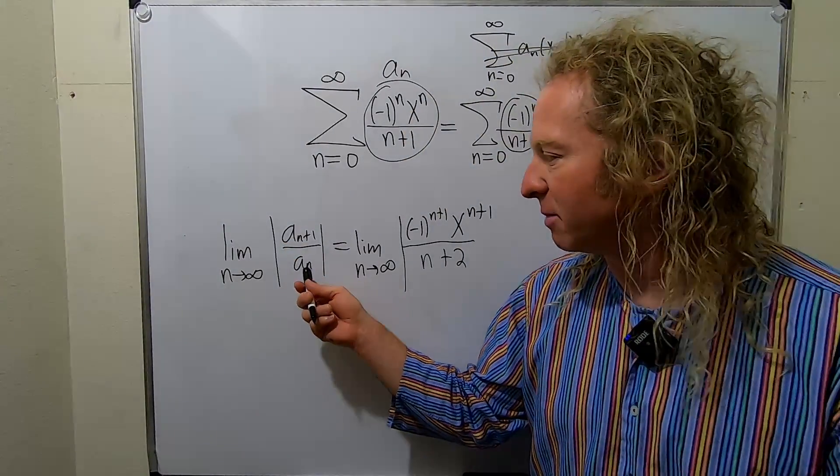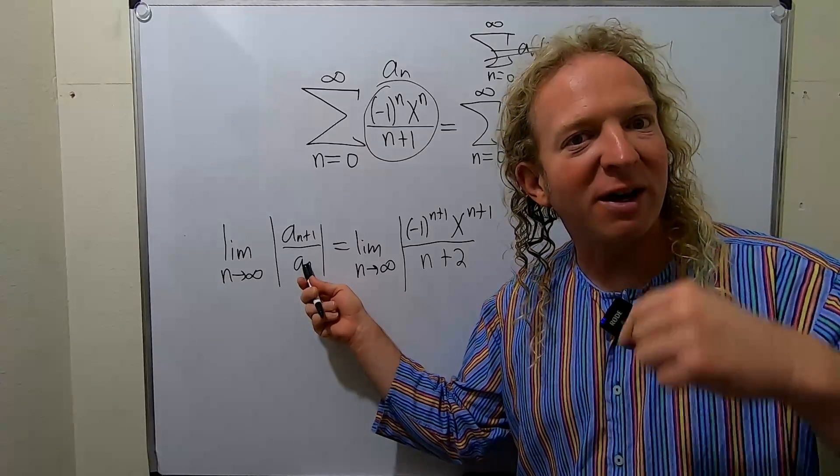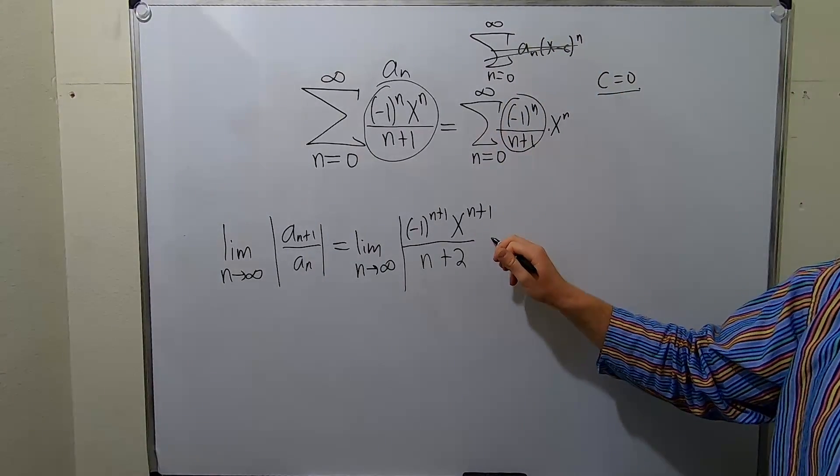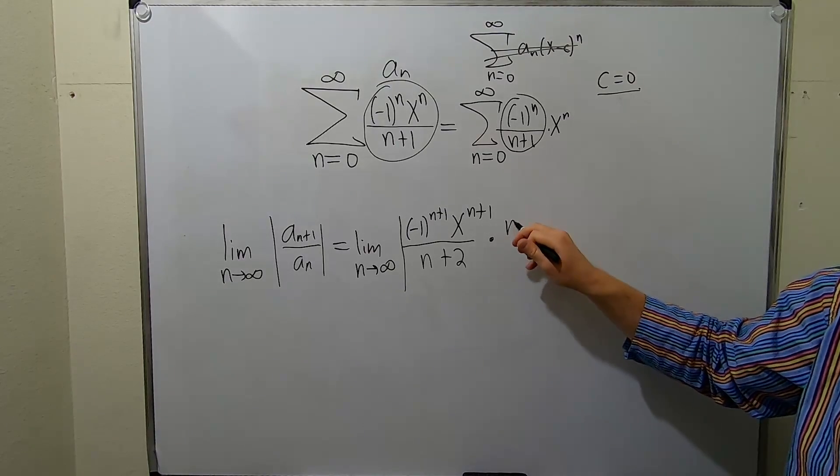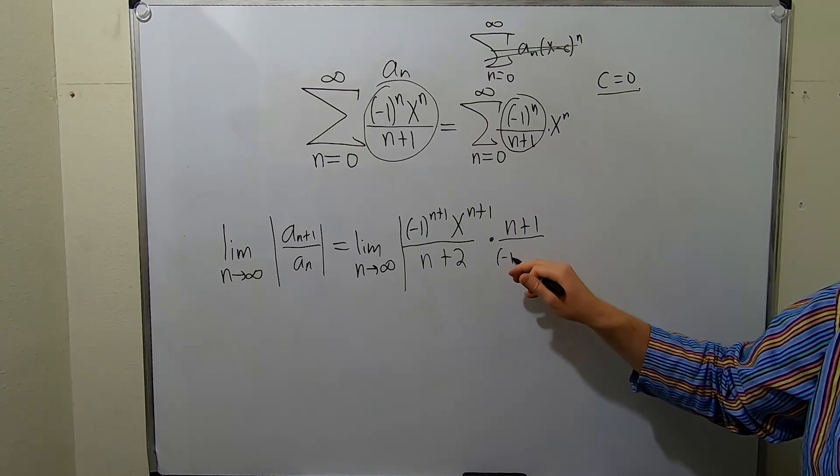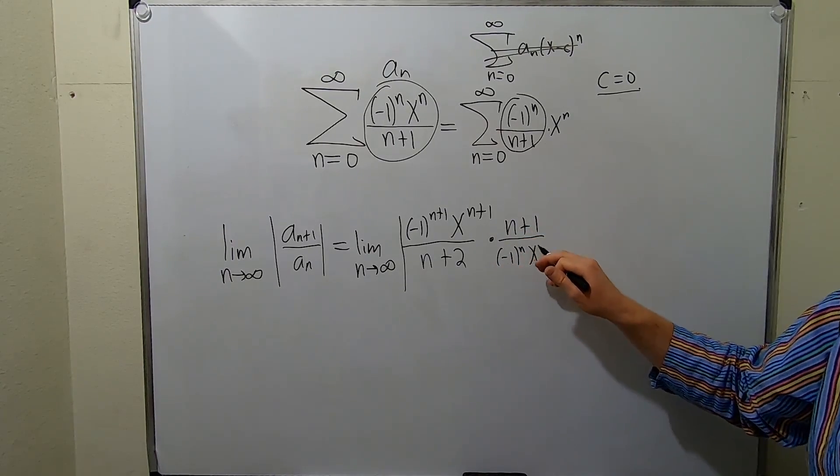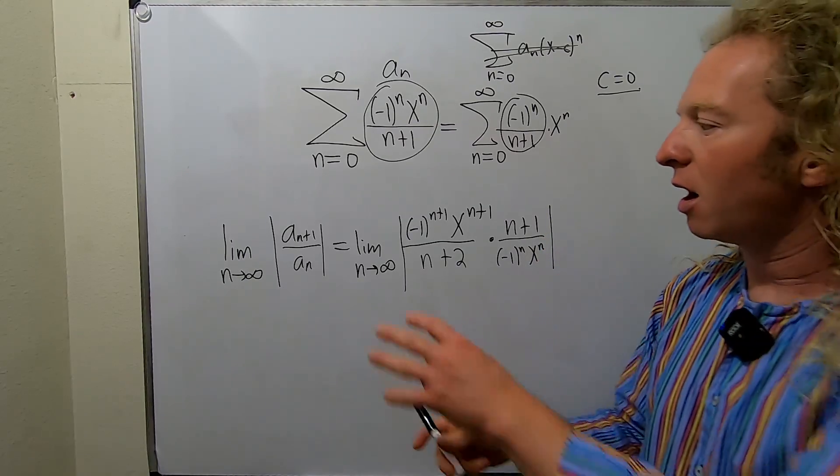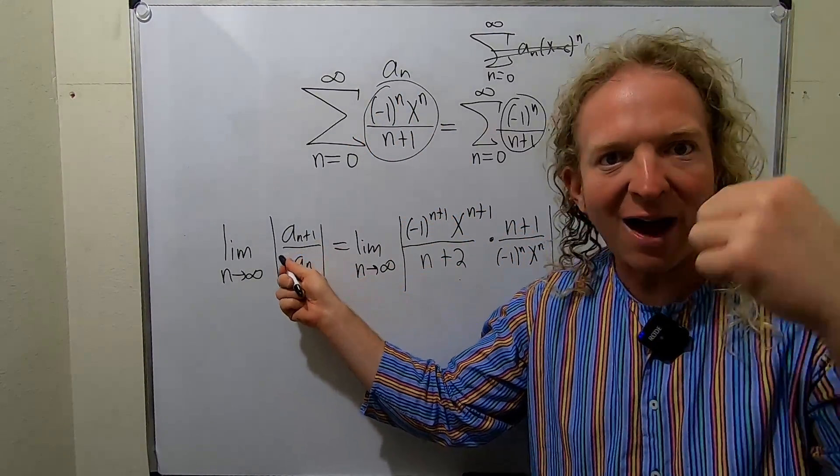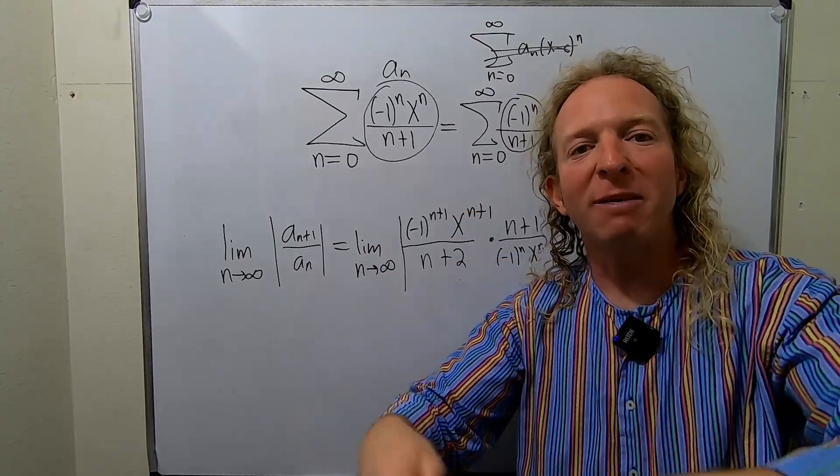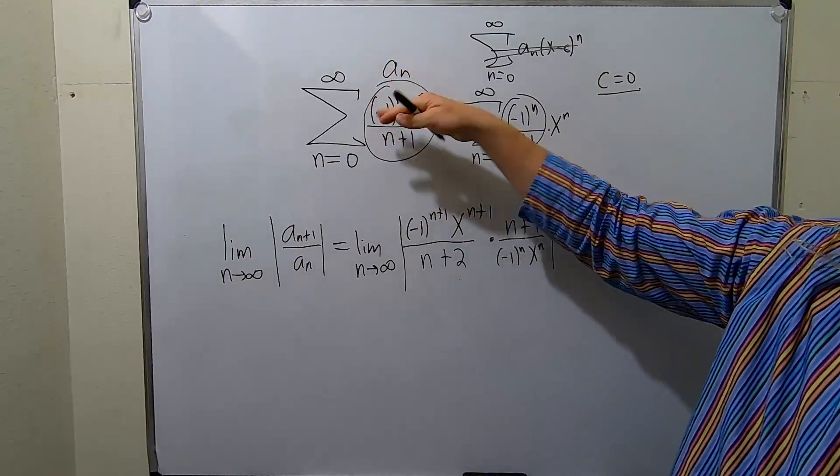However, instead of dividing by a sub n, let's multiply by the reciprocal. In other words, I'm going to put a times here and then just flip this. It makes it much easier. So n plus one over negative one to the n, x to the n. Typically in these problems you plug in n plus one, you write it down, and then instead of dividing by a sub n you multiply by the reciprocal. So basically you take this and you just flip it.